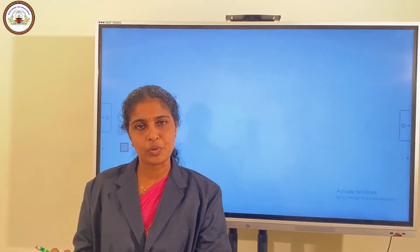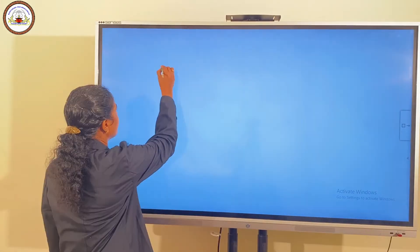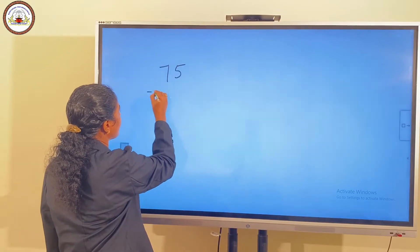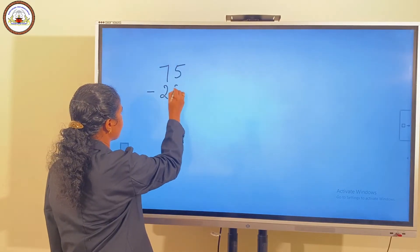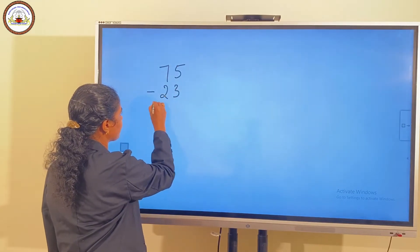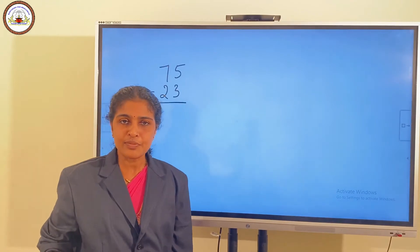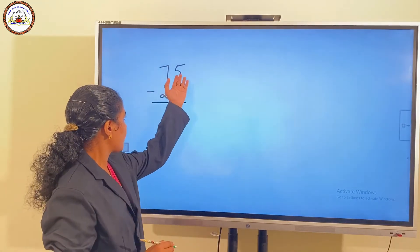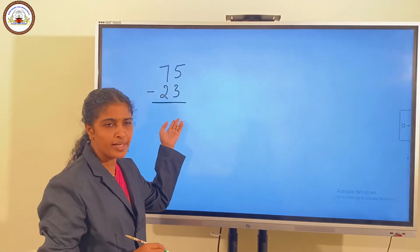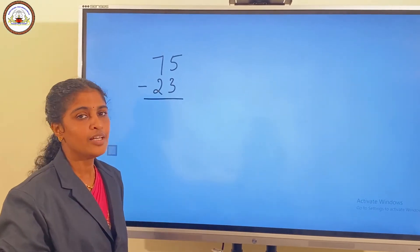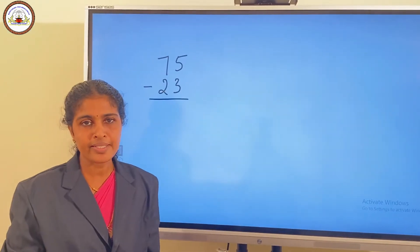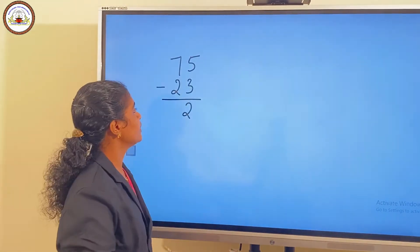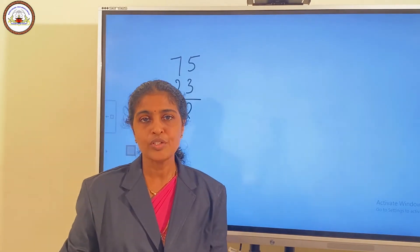Now we will do some examples. 75 minus 23. First we subtract the ones place. 5 ones minus 3 ones. 5 ones minus 3 ones is 2 ones. 5 minus 3 is 2.